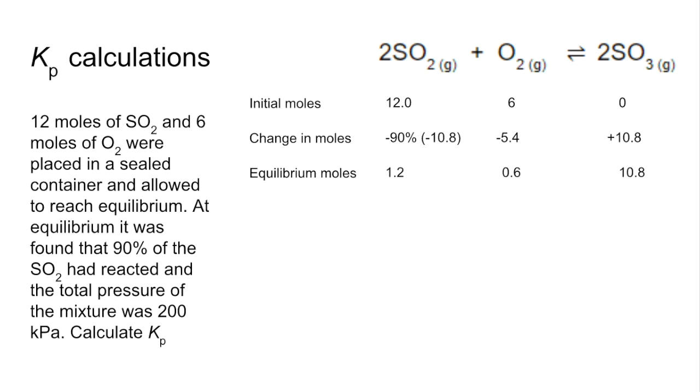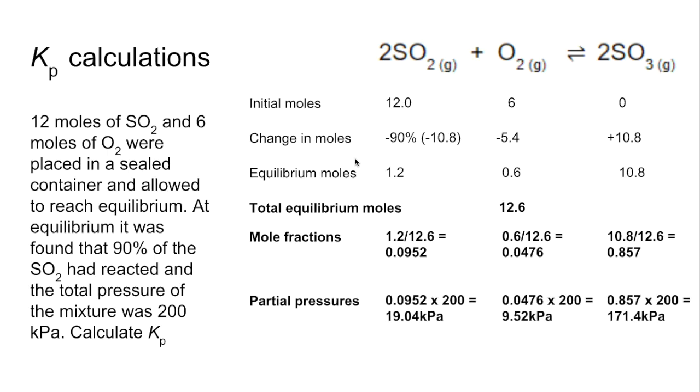We now need to work out the total number of moles at equilibrium, so we just add those together. And the mole fractions now is going to be the components moles divided by the total moles. The partial pressures are going to be the mole fraction multiplied by the total pressure, which is 200 kilopascals. So we get those. And now we just substitute those into the Kp expression, and we get a value of this.